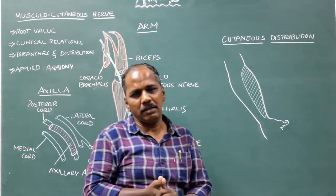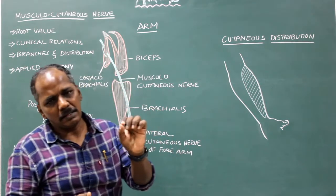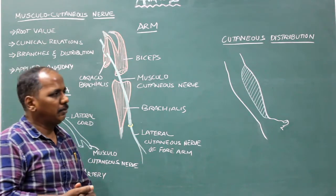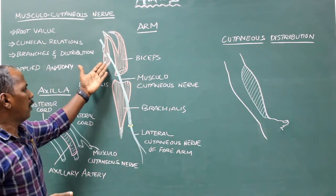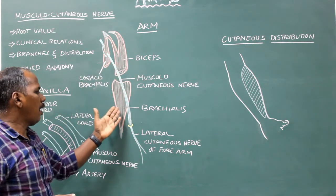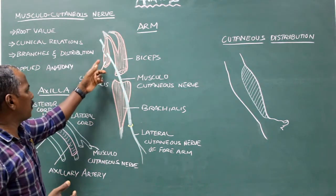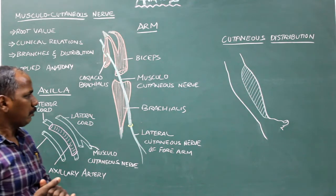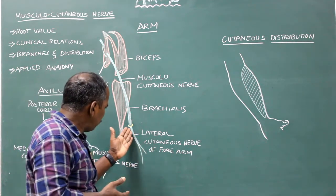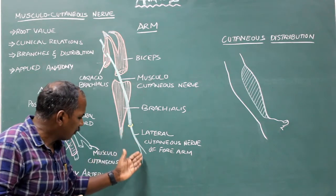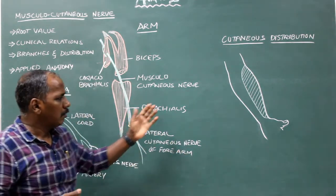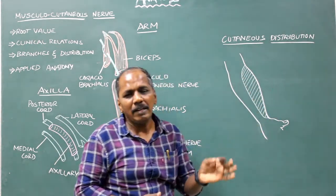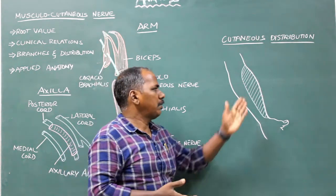Branches and distribution: an articular branch to the elbow joint; muscular branches to the coracobrachialis, biceps, and brachialis — the branch to coracobrachialis arises before the nerve pierces that muscle; and a cutaneous branch — the lateral cutaneous nerve of the forearm — supplying the skin over the lateral part of the anterior surface of the forearm.